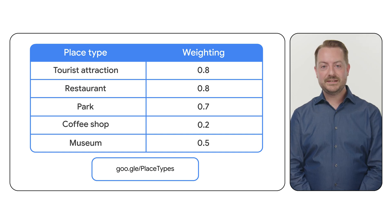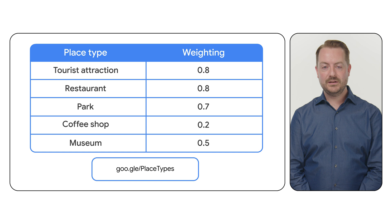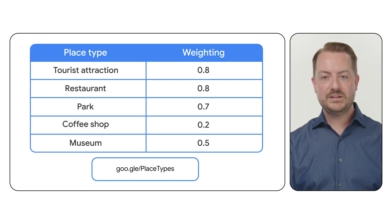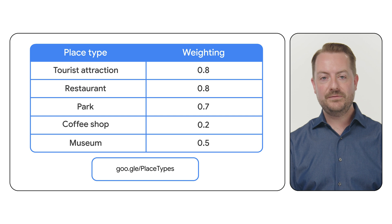Next, we will assign a weight to each type based on its importance. Maybe tourist attractions and restaurants are highly important, say 0.8, while coffee shops are less critical, maybe 0.2. These weights are crucial for tailoring the score for your needs. You should define them based on your specific use case and user preferences.